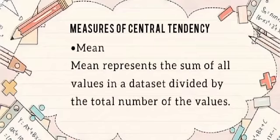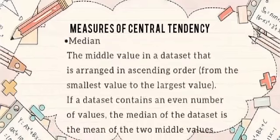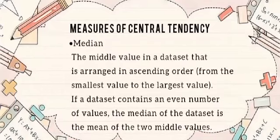Mean represents the sum of all values in a data set divided by the total number of the values. Median is the middle value in a data set that is arranged in ascending order, from the smallest value to the largest value. If a data set contains an even number of values, the median of the data set is the mean of the two middle values.